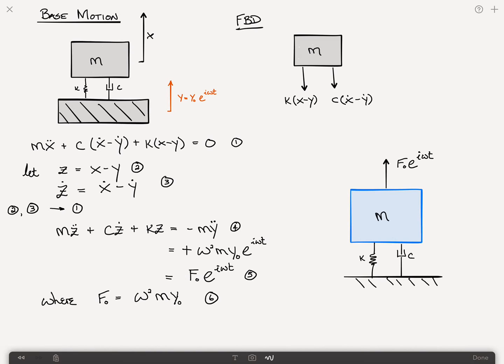In other words, we can replace the base motion with an equivalent system, this one here, which is one that we're familiar with. The only difference is that this f sub zero is actually equal to omega squared my sub zero, which is just a constant. But other than that, this should be real familiar territory now, and we've seen this in a previous video how to treat this. There's a link to that up above.